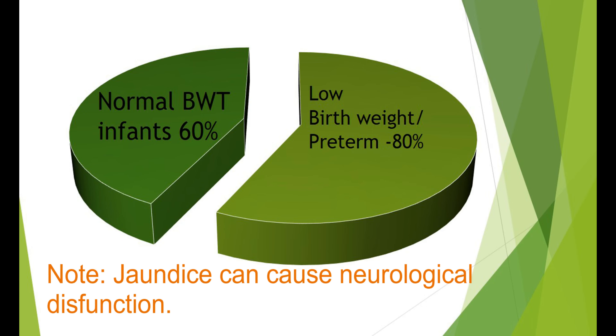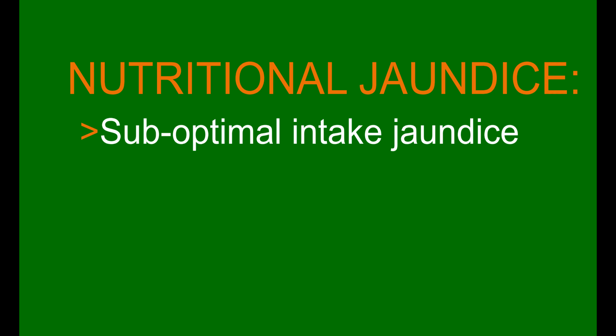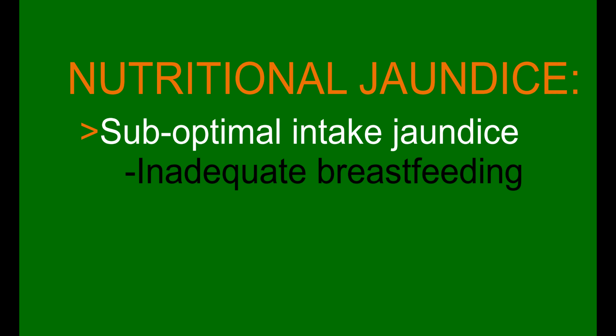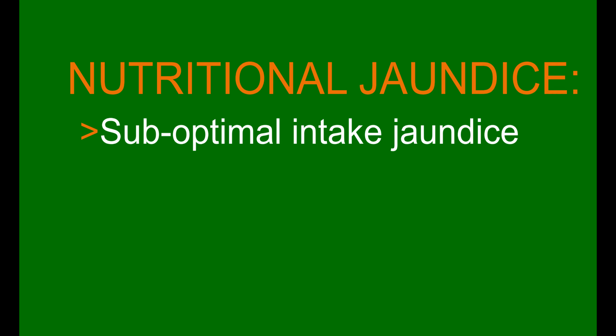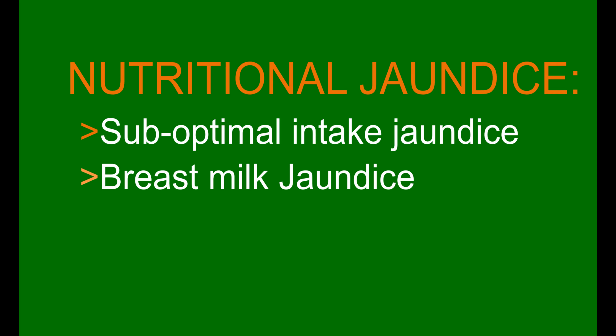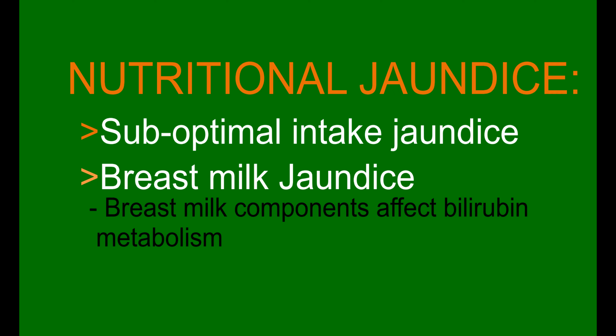If unchecked, jaundice can induce neurological dysfunction in the neonate. Suboptimal intake jaundice is a type of jaundice that results from inadequate breast milk intake and generally occurs in the first week of life. Another type is breast milk jaundice, which results from substances in the mother's milk that interfere with the ability of the liver to metabolize bilirubin. It starts from the second and later weeks after birth.